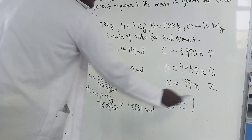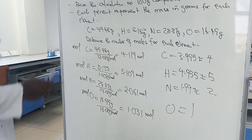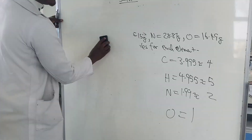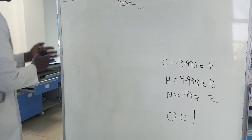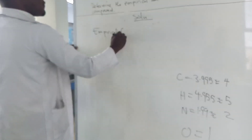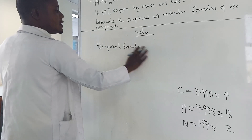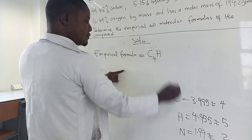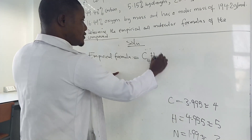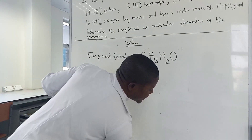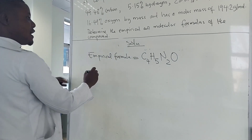These numbers represent the subscripts in the empirical formula. So we write the empirical formula using the subscripts we found: C4H5N2O. This is our empirical formula. Then we calculate the molecular formula.